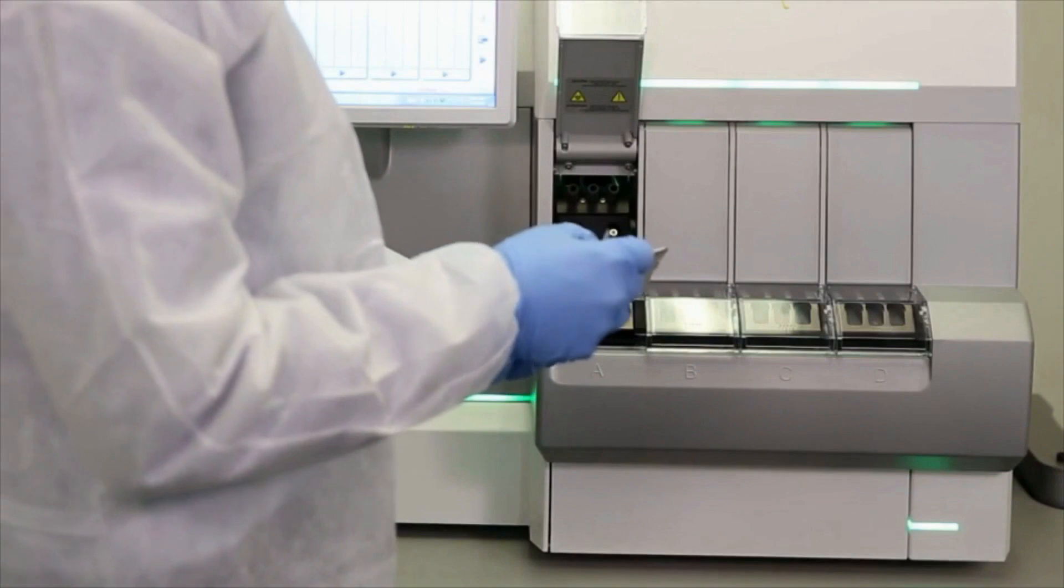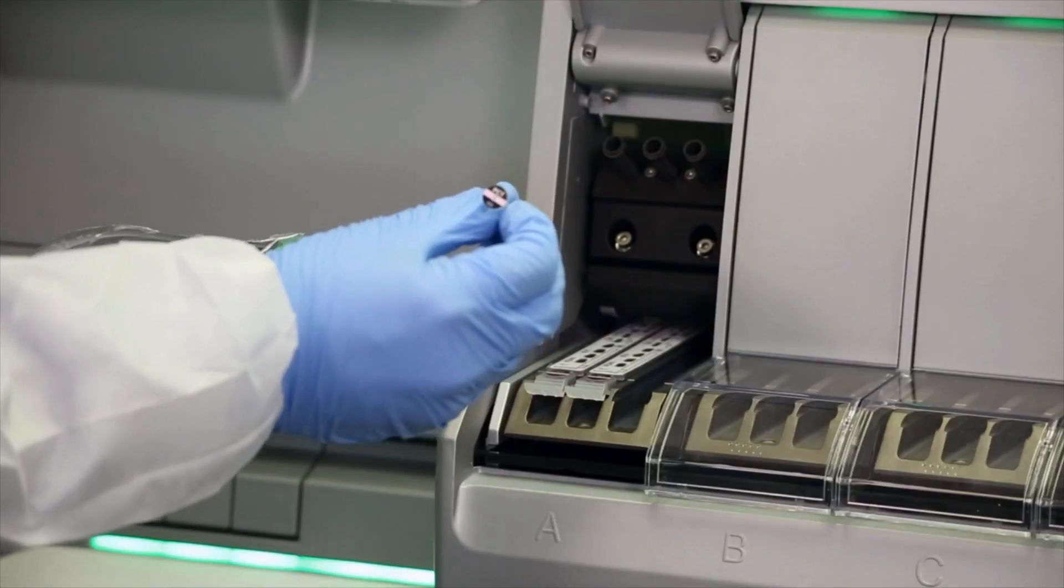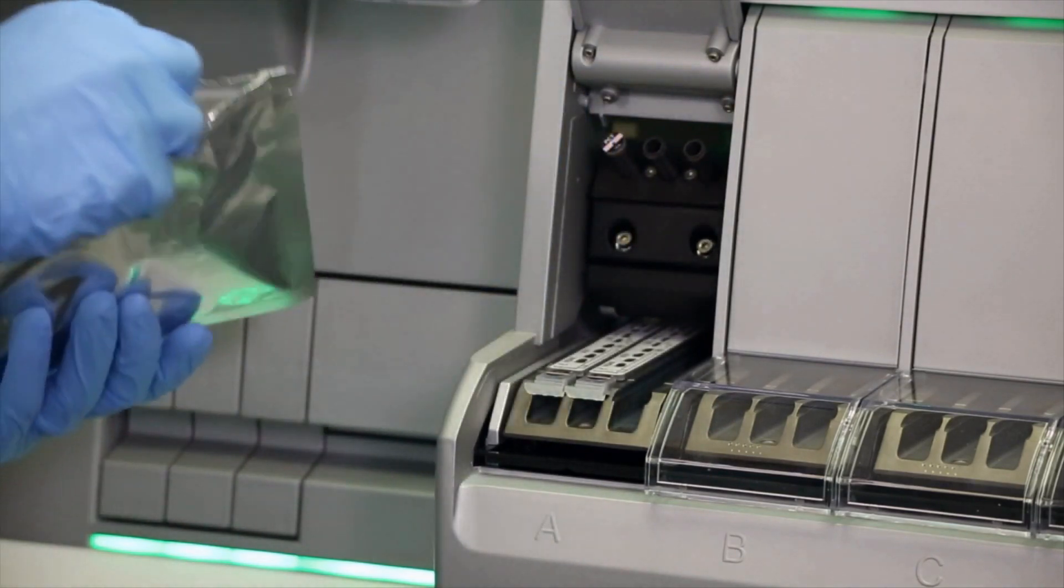Remove the spurs from their sealed pouch. Verify the color-coded spur label matches the color-coded label on the strip. Place the spurs into the spur blocks above the respective strips.